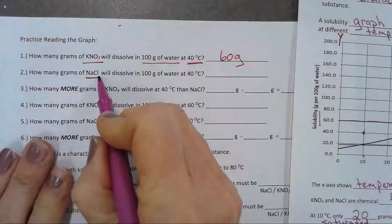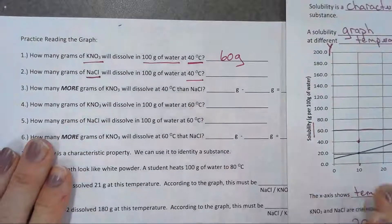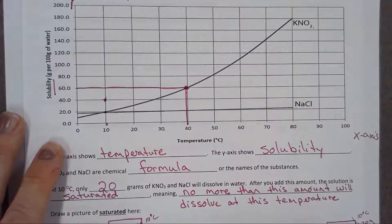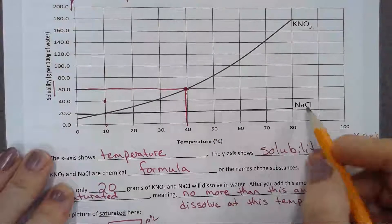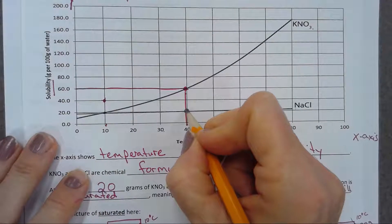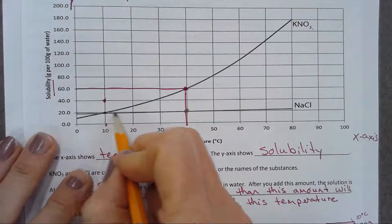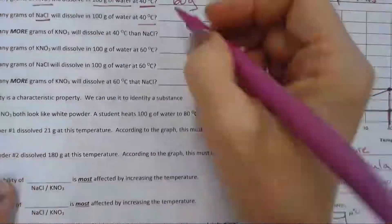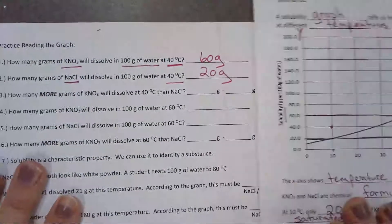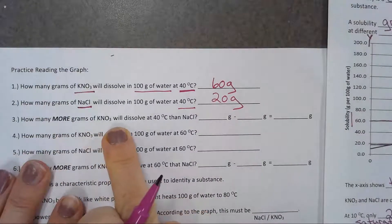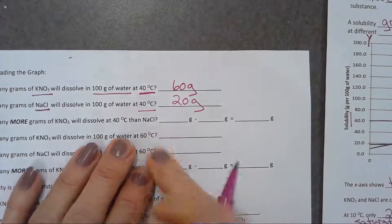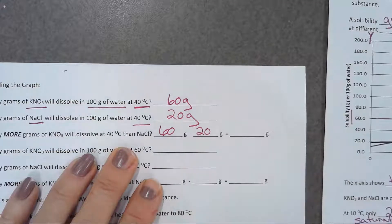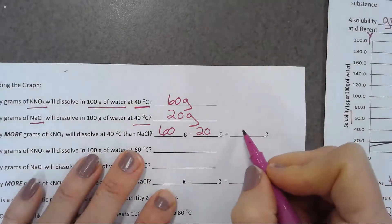Next question: how much NaCl will dissolve in water at 40 degrees Celsius? Here's my NaCl line at 40 degrees — only 20 grams dissolves. So 20 grams for NaCl. How many more grams of KNO3 dissolve at 40 degrees than NaCl? I had 60 grams of KNO3 and 20 grams of NaCl at 40 degrees — the difference is 60 minus 20, which is 40 grams.